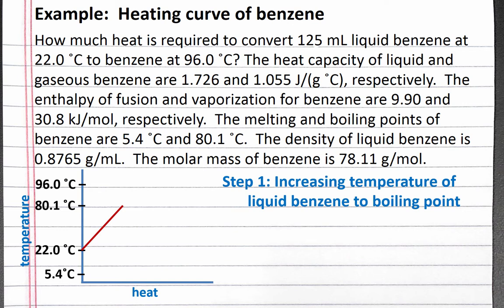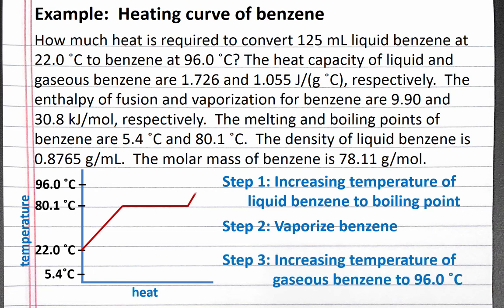Once we reach the boiling point, the added heat no longer increases the temperature of the liquid. Instead, the thermal energy goes into the vaporization process. So our second step is to vaporize benzene, changing it from a liquid to a gas. Once all of the liquid benzene has been vaporized, our third step is to increase the temperature of the gaseous benzene to 96 degrees Celsius.